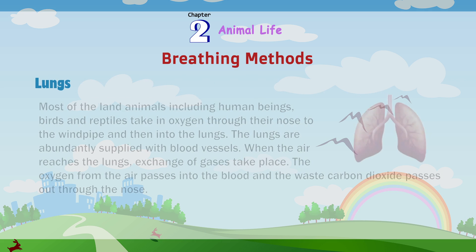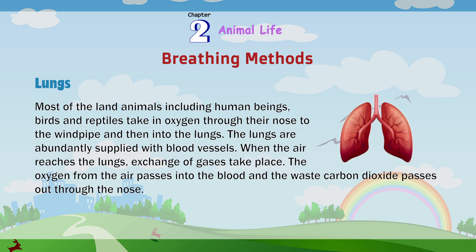Lungs. Most of the land animals, including human beings, birds and reptiles, take in oxygen through their nose, to the windpipe and then into the lungs. The lungs are abundantly supplied with blood vessels. When the air reaches the lungs, exchange of gases takes place. The oxygen from the air passes into the blood and the waste carbon dioxide passes out through the nose.